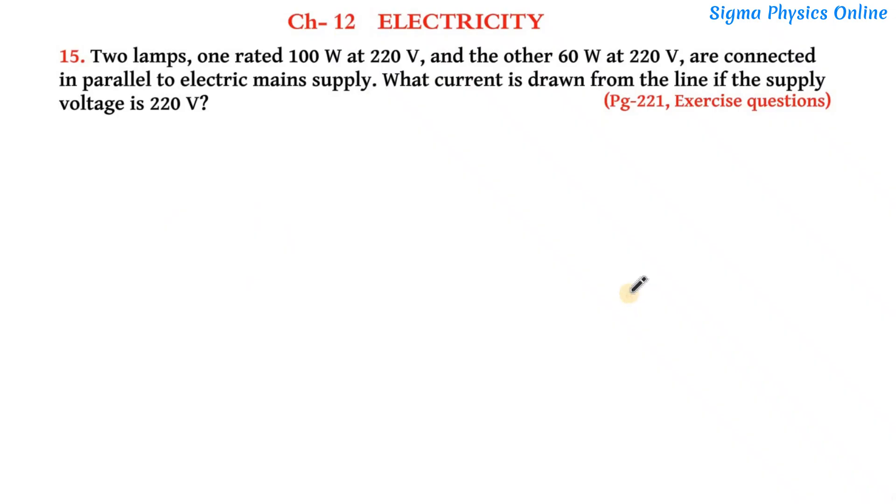Hello students, welcome back. Let's solve the exercise question number 15 of chapter 12 electricity from class 10 NCERT science textbook. The question reads: two lamps, one rated 100 watt at 220 volt and the other 60 watt at